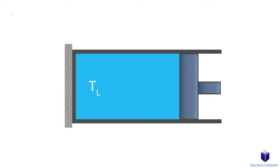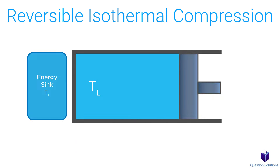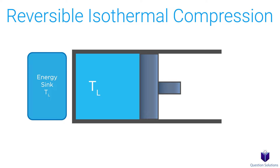The third step is called the reversible isothermal compression. The insulation is removed and the cylinder is now in contact with an energy sink at temperature TL. The sink is at the same temperature as the gas. An external force pushes on the piston, moving it to the left, causing the gas to compress and the temperature to begin rising. But as soon as it rises, heat is transferred to the energy sink, so the temperature of the gas remains constant at TL. Because the temperature difference between the energy sink and the gas never changes more than an infinitesimal amount, this is a reversible heat transfer process. The total heat rejected from the gas during this step is labeled QL.